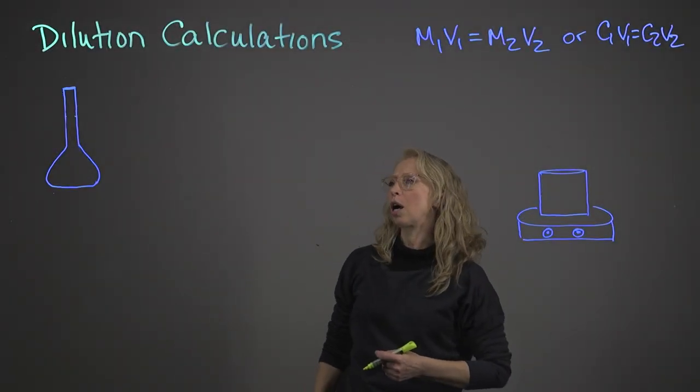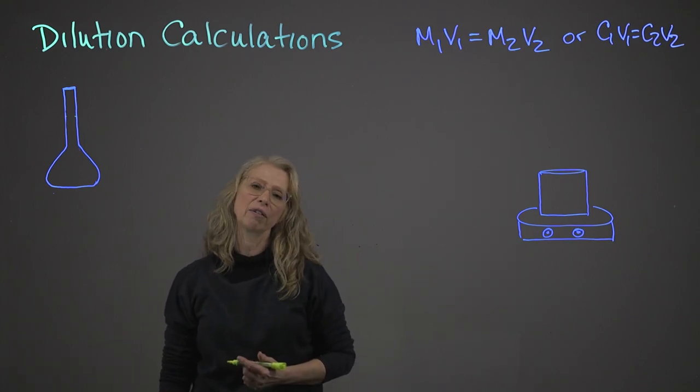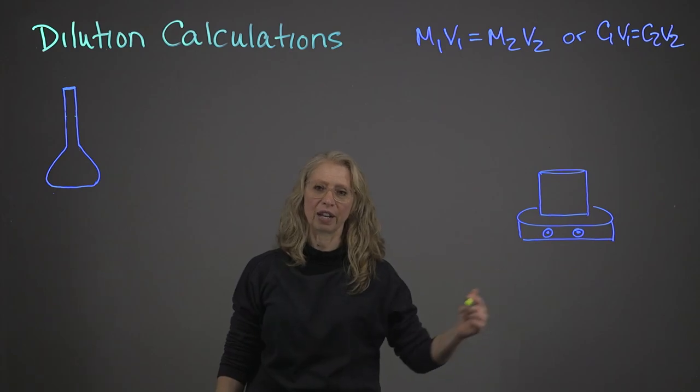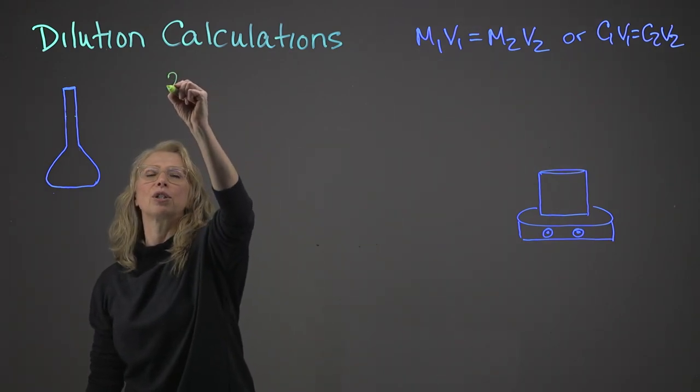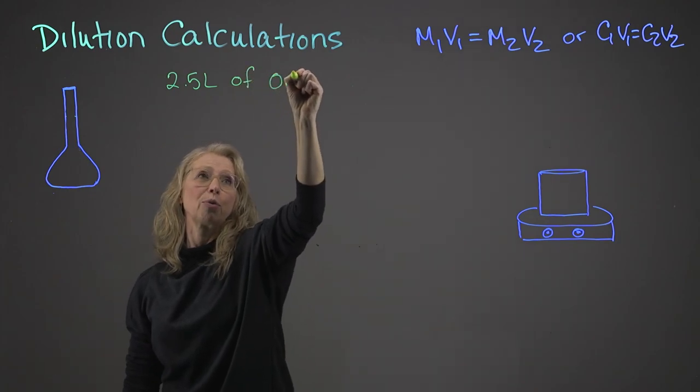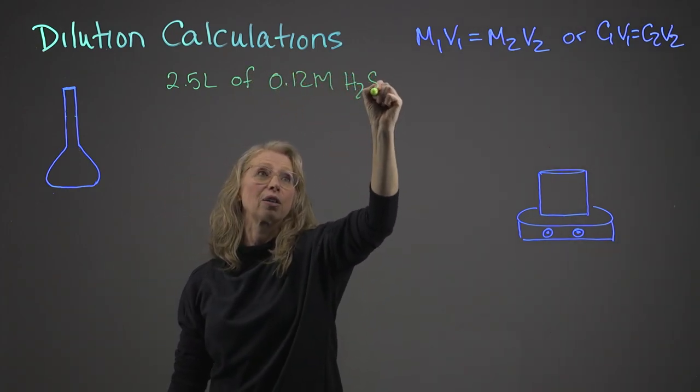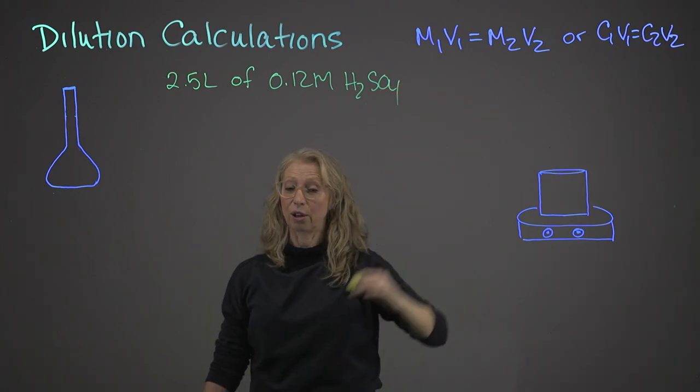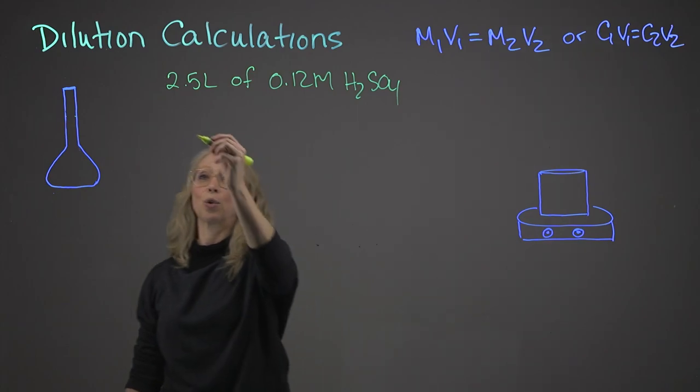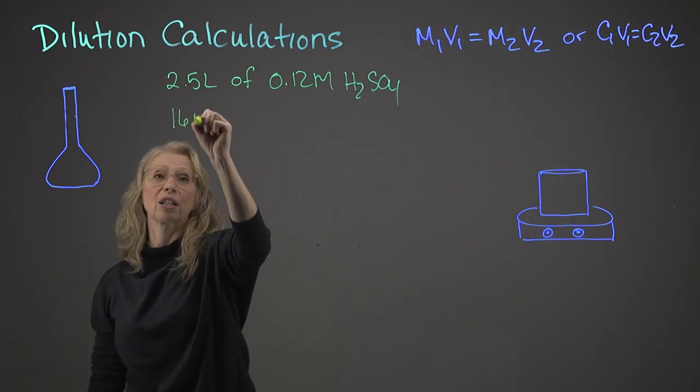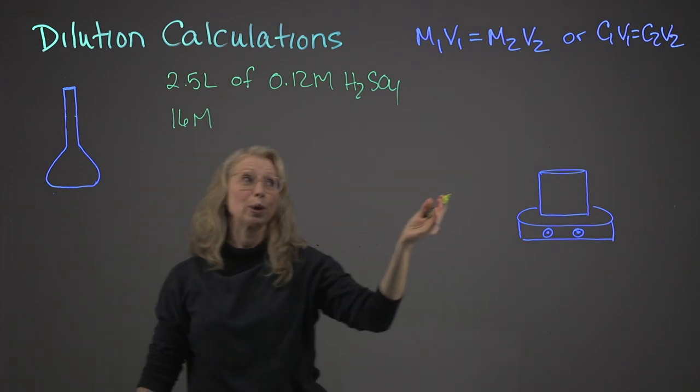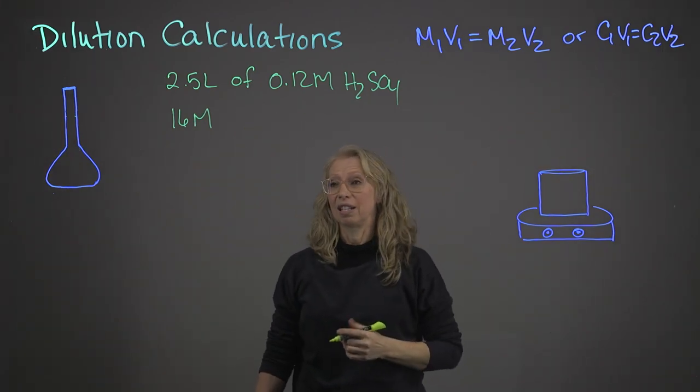Let's say you are tasked to prepare 2.5 liters of a 0.12 molar solution of H2SO4. So 2.5 liters of 0.12 molar H2SO4, you have a sulfuric acid solution that you have to prepare, and you're being told that the concentration of the solution that you're going to use is 16 molar. So now we'll use this calculation.